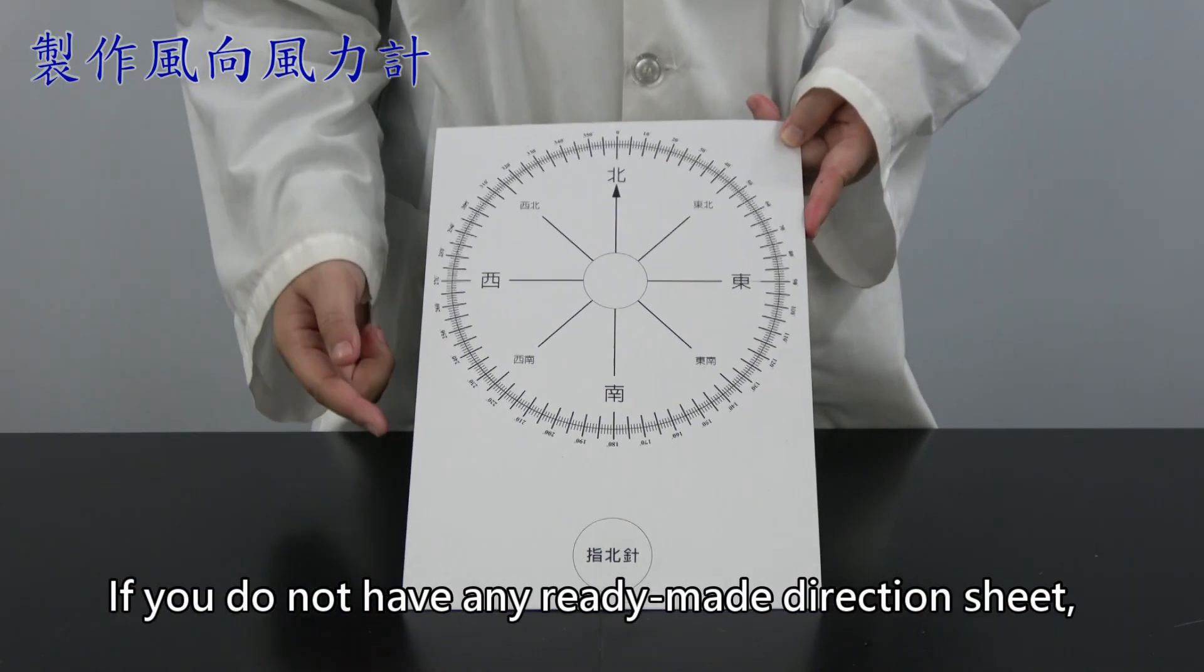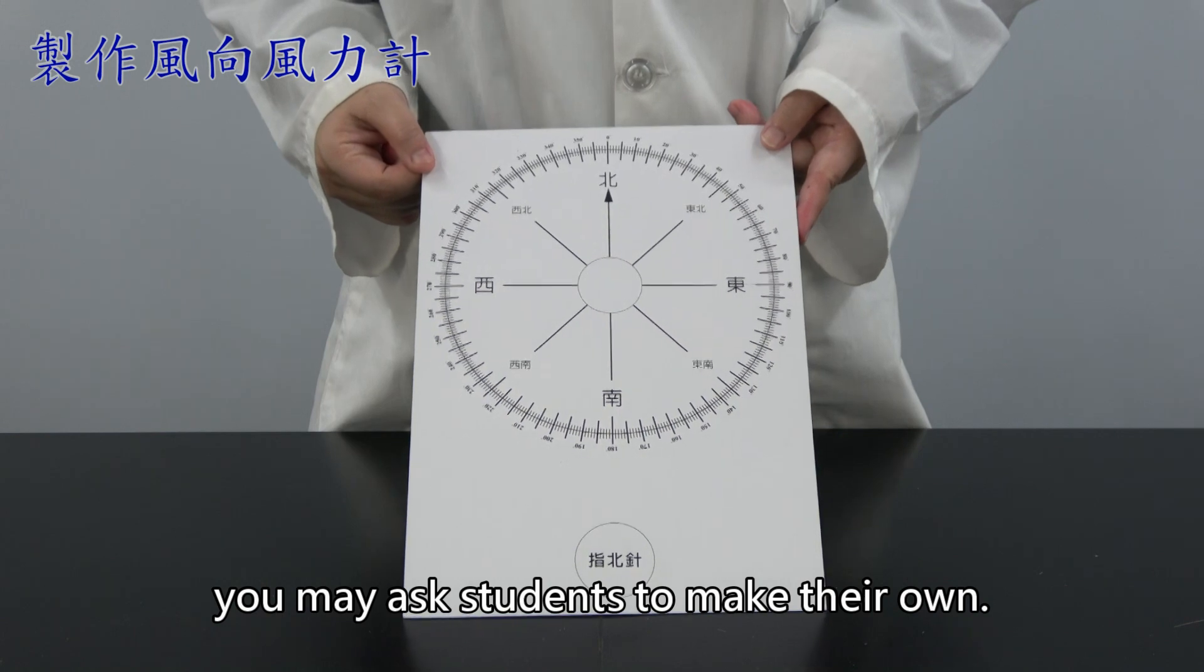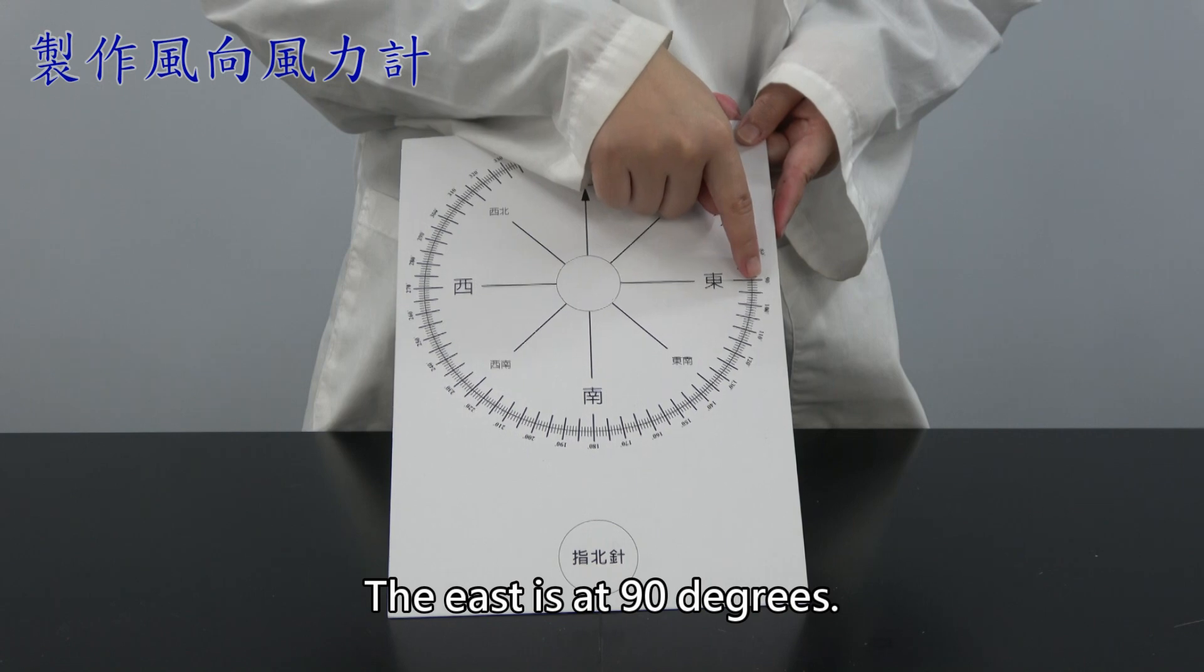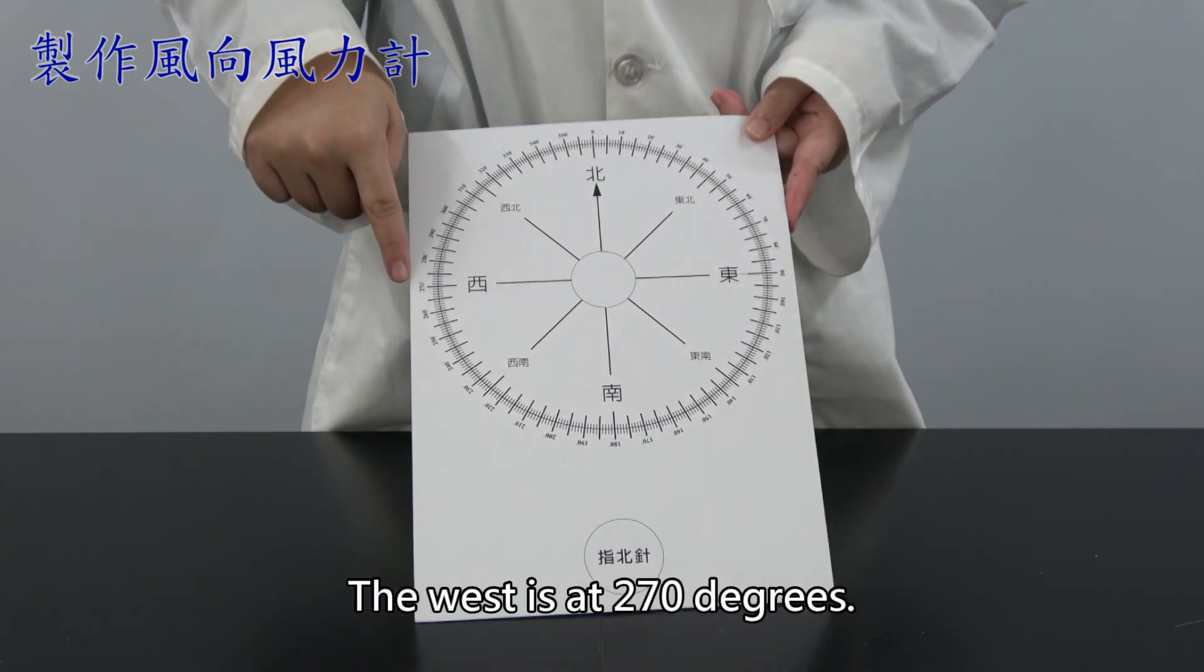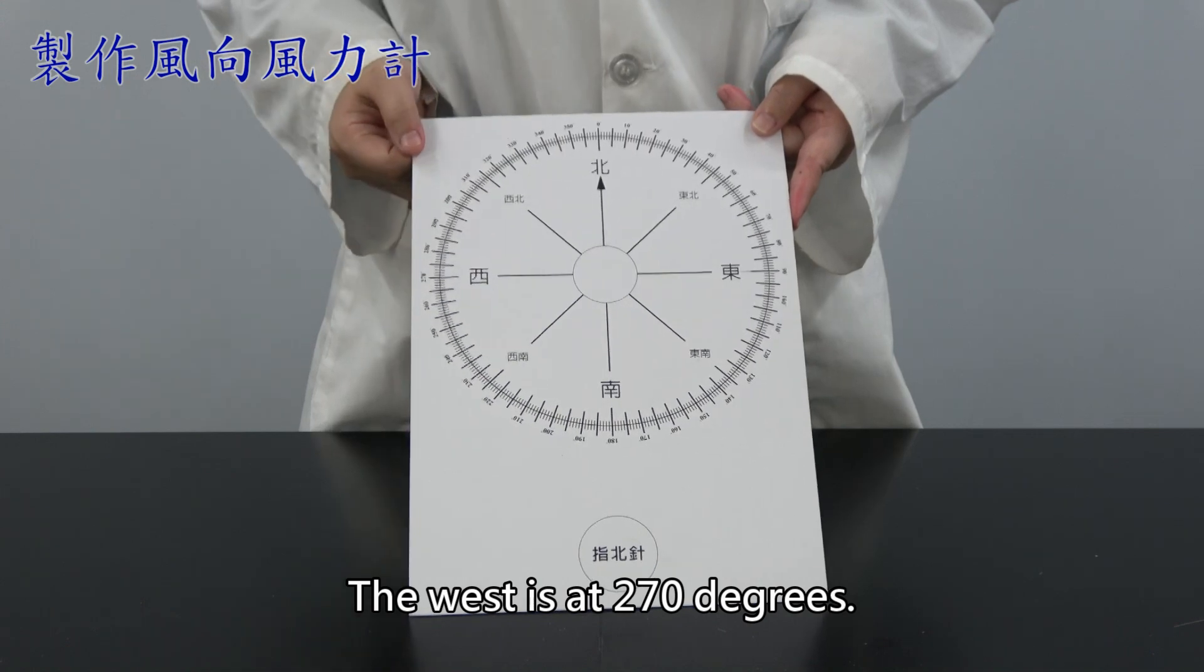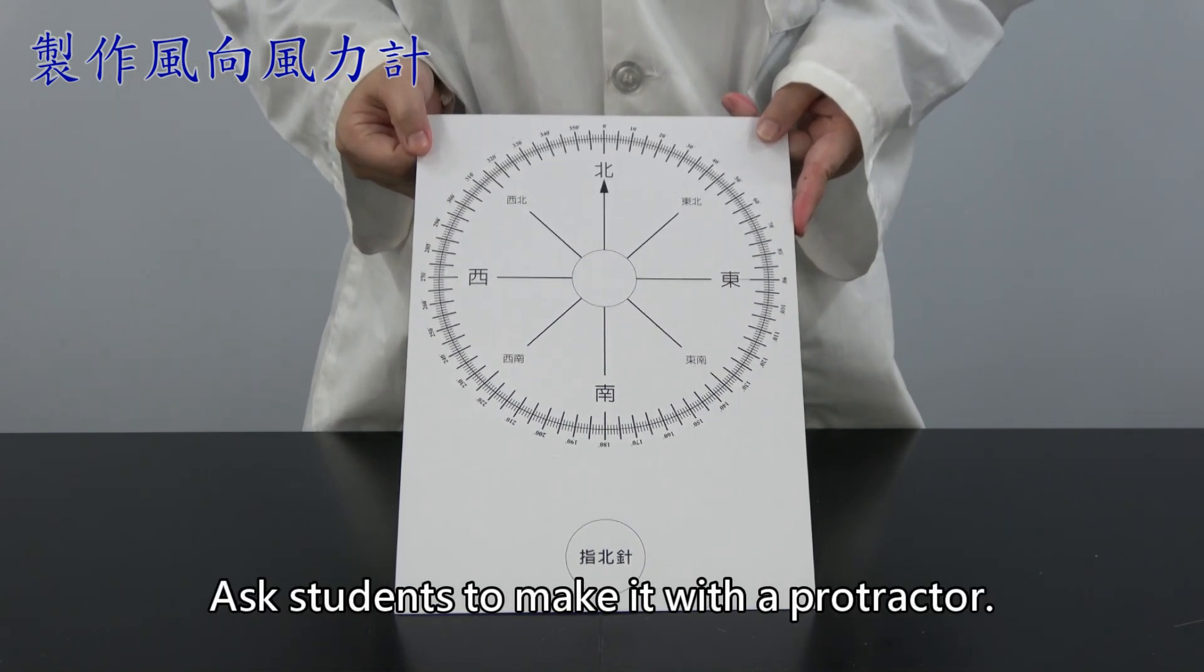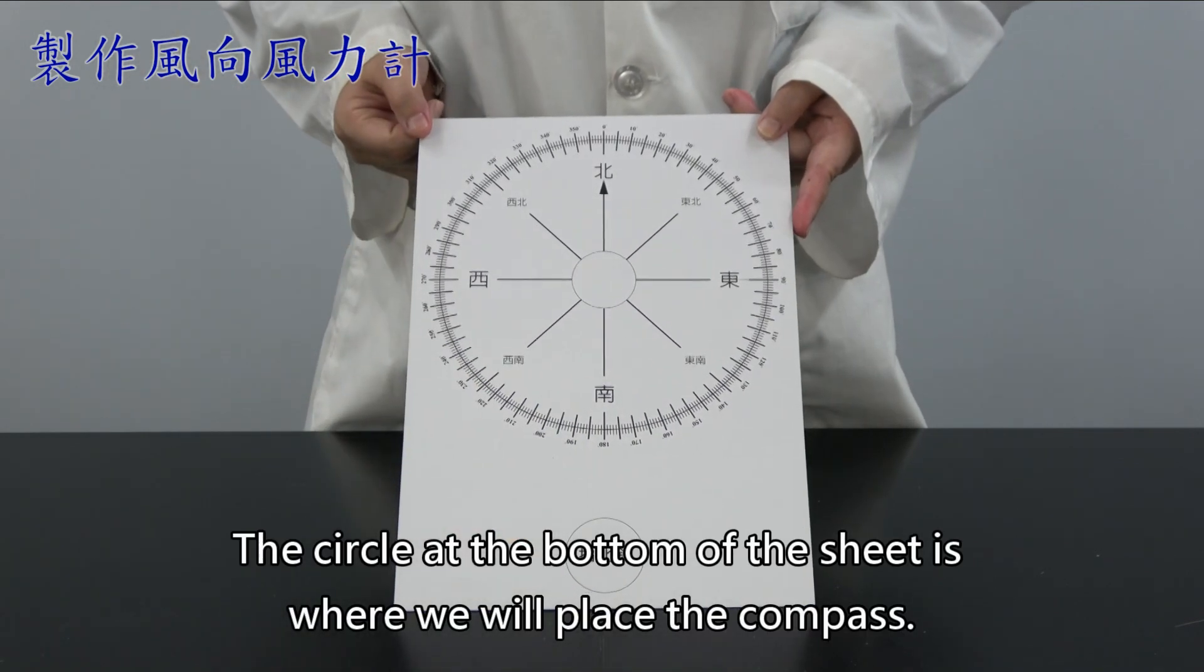If you do not have any ready-made direction sheet, you may ask students to make their own. We can say that the north is at 0 degrees, the east is at 90 degrees, the south is at 180 degrees, the west is at 270 degrees. Ask students to make it with a protractor. The circle at the bottom of the sheet is where we will place the compass.